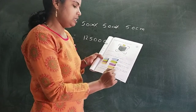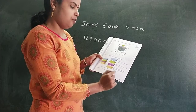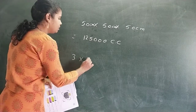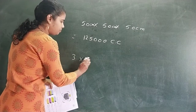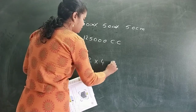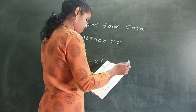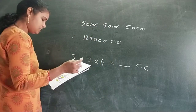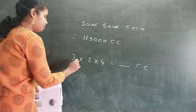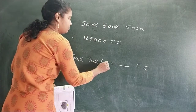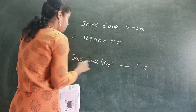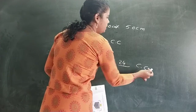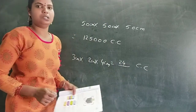So the volume of the cuboid is length three, breadth two, height four. Three into two into four. Equal to how much? Three into two is six, six into four is twenty-four. Twenty-four cubic centimetres.